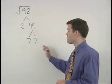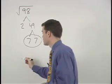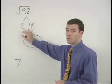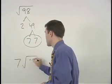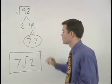So here since our 7's pair up, a 7 will come out of the radical. Since the 2 does not pair up it stays inside the radical. And our answer is 7 root 2.